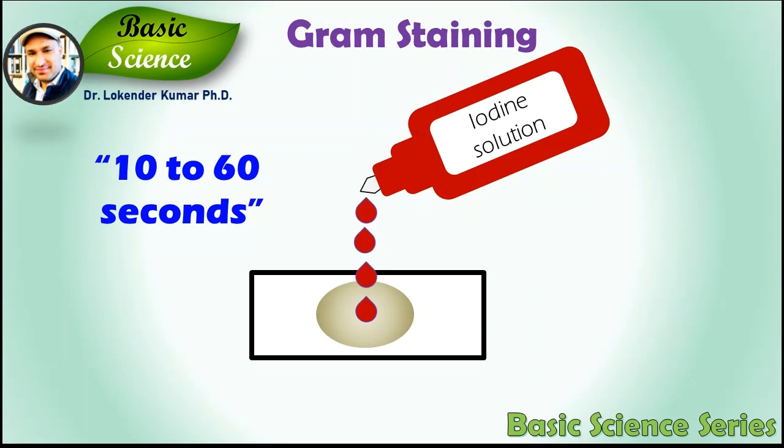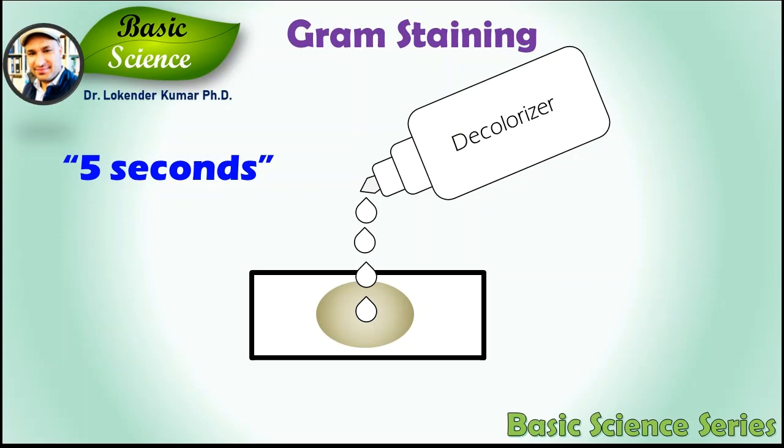Now add the iodine solution on the smear, enough to cover the fixed culture. Let it stand for 10 to 60 seconds, then pour off the iodine solution and rinse the slide with running water. Shake off the excess water from the surface. Add a few drops of decolorizer so the solution trickles down the slide, then rinse with water for 5 seconds. The exact time to stop is when the solvent is no longer colored as it flows over the slide.